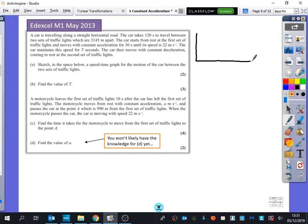It says the car starts from rest at the first set of traffic lights and moves with constant acceleration for 30 seconds until its speed is 22. The car maintains this speed for T seconds. It then moves with constant deceleration coming to rest at the second set of traffic lights.